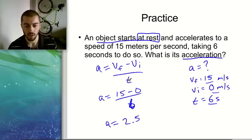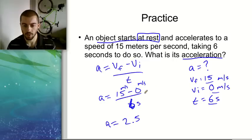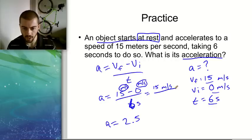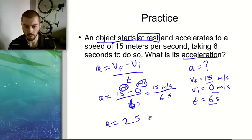And our units here, so we have meters per second minus meters per second over seconds. So when we do 15 minus 0, this will give us 15 meters per second, because we had meters per second in both spots here. And then our time was in seconds. So meters per second per second. So meters per second per second would be our units for acceleration here.